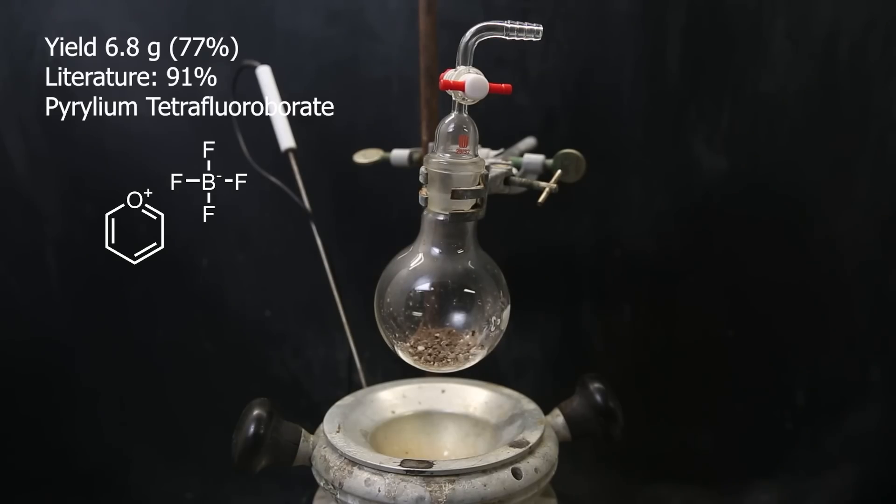In the end, I have 6.8 grams of peryllium tetrafluoroborate, which is a yield of 77%, compared to the 91% in literature. I think that's alright, since my exclusion of air and water wasn't so perfect.